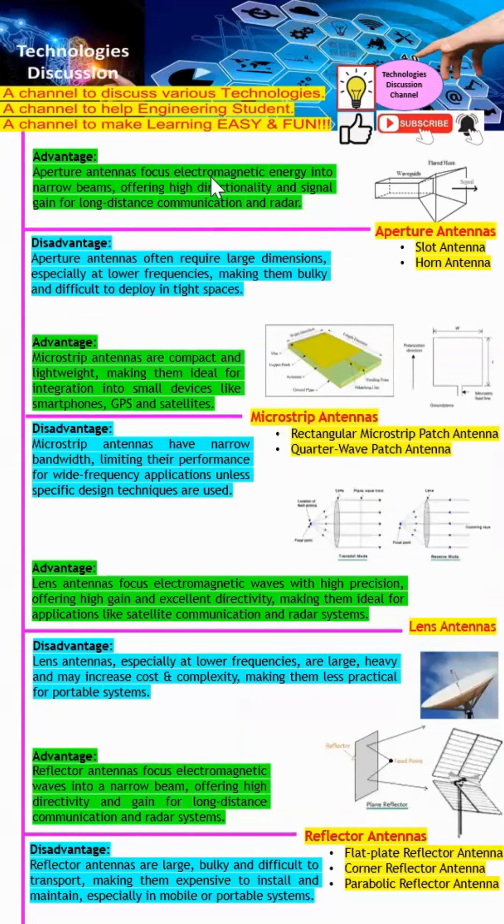Next one will be aperture antenna. Aperture antennas can focus EM energy into a very narrow beam, offering high directivity and high gain. However, aperture antennas are known to have large size, which becomes a big issue especially at low frequencies.